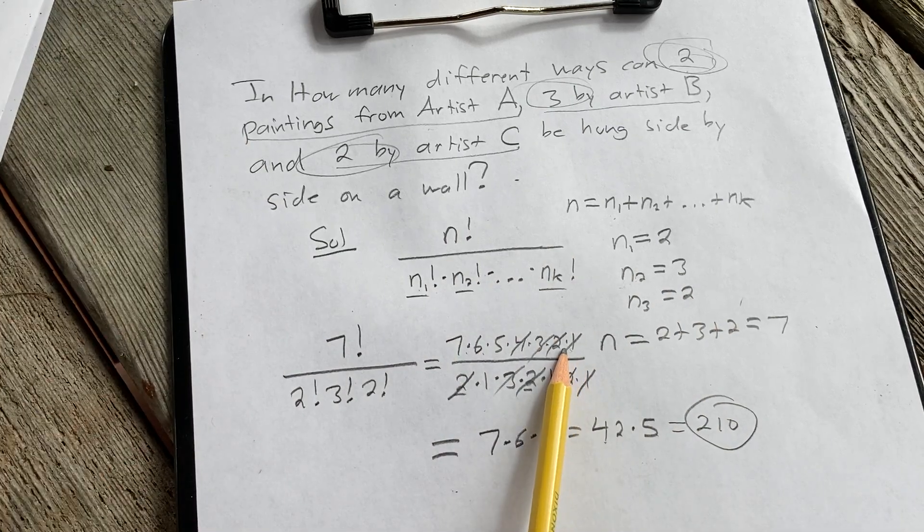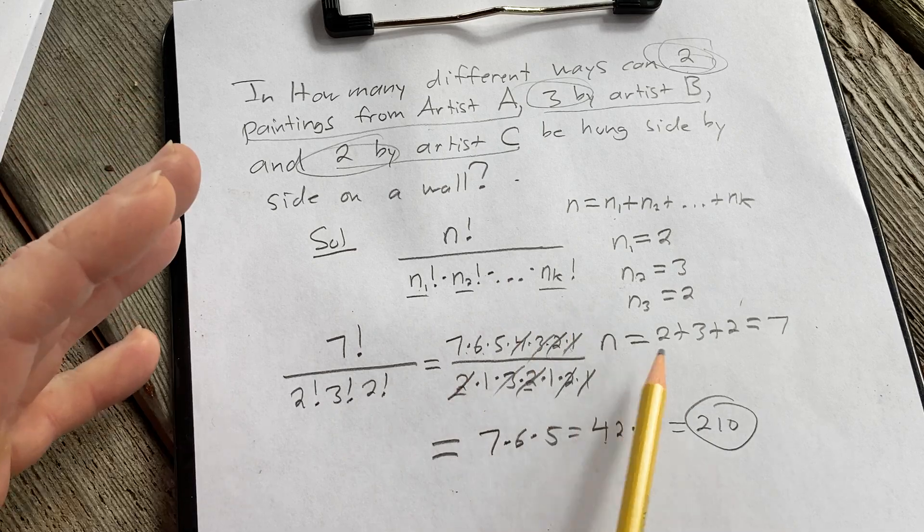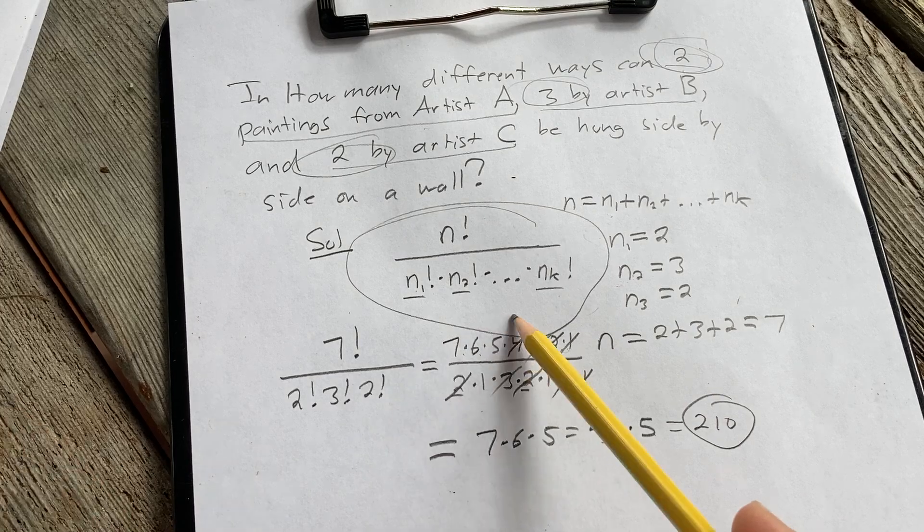So that's how you solve a problem when you have permutations of objects where some of them are considered identical. You can use this super powerful formula. I hope this video has been helpful to you. Good luck.